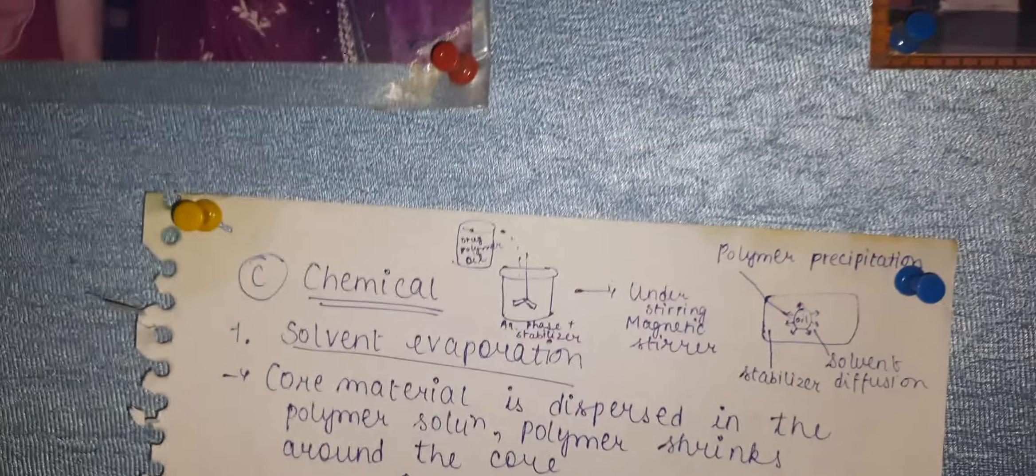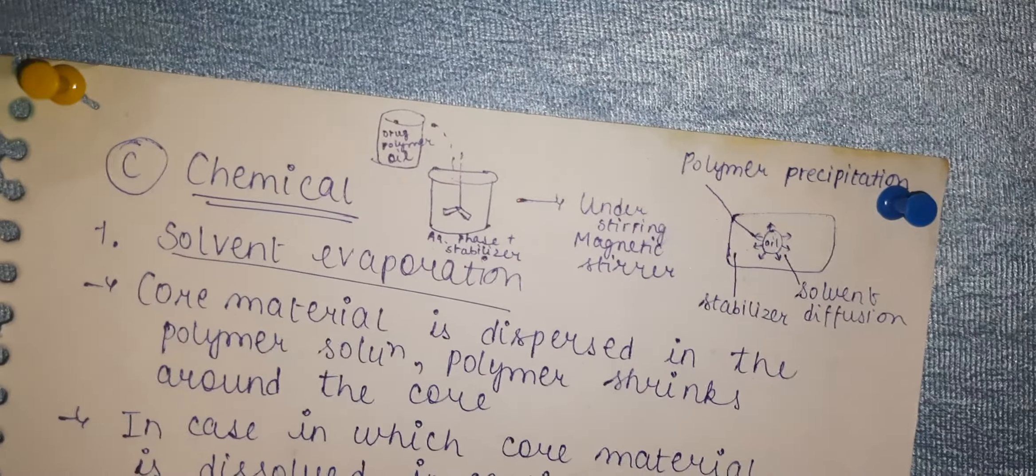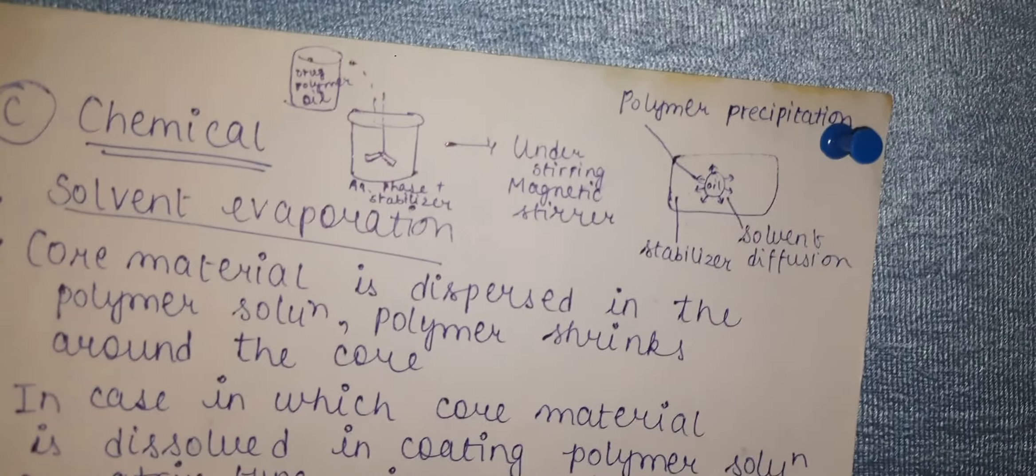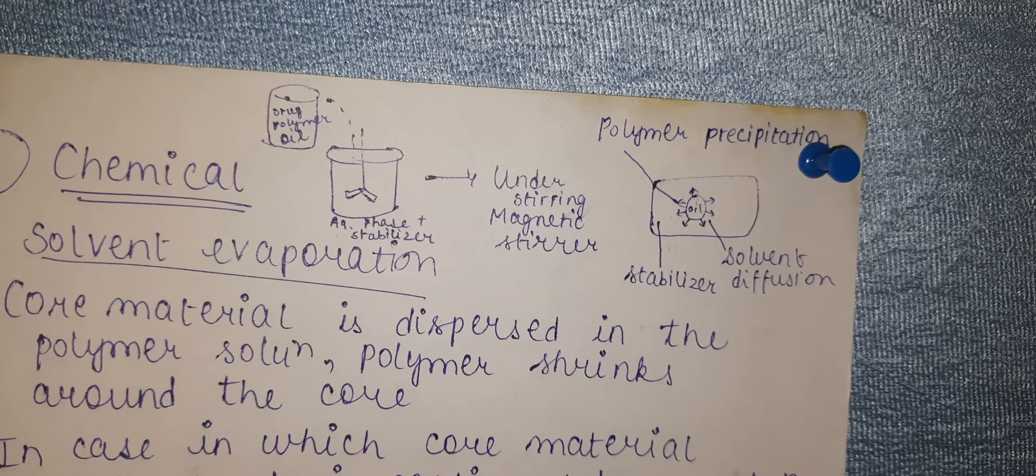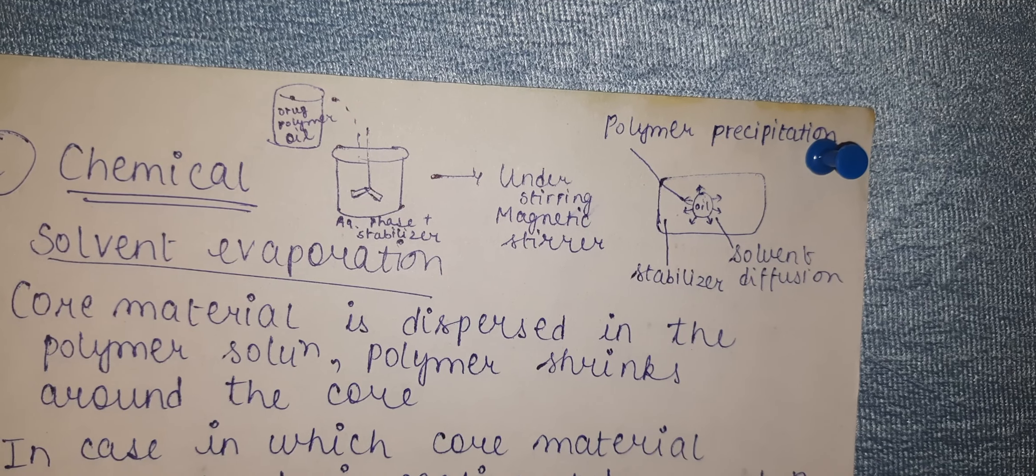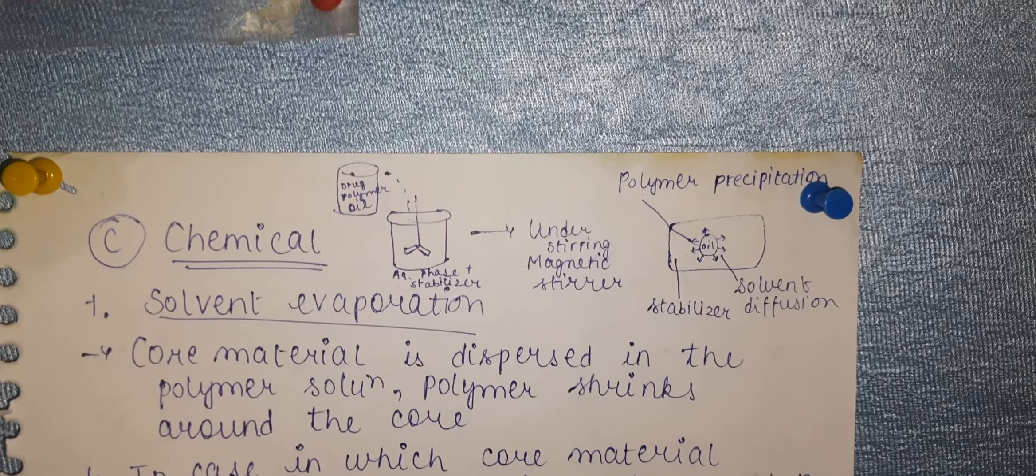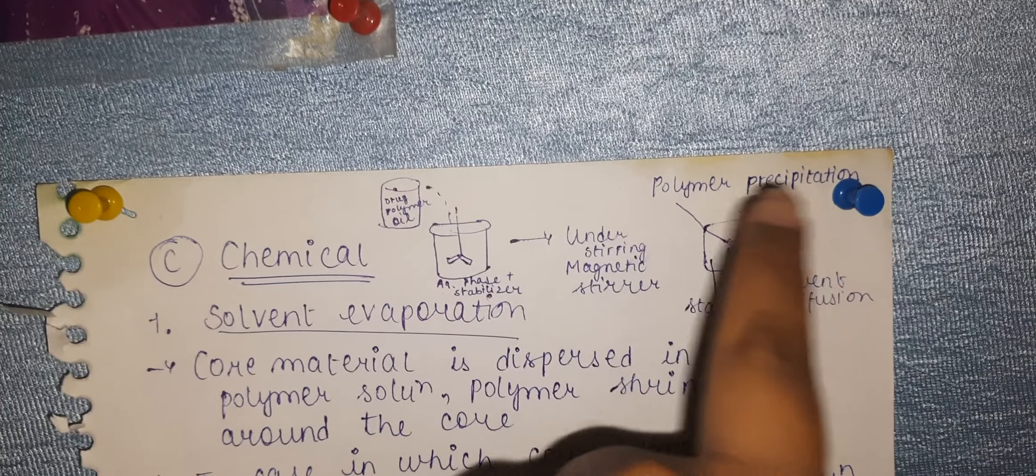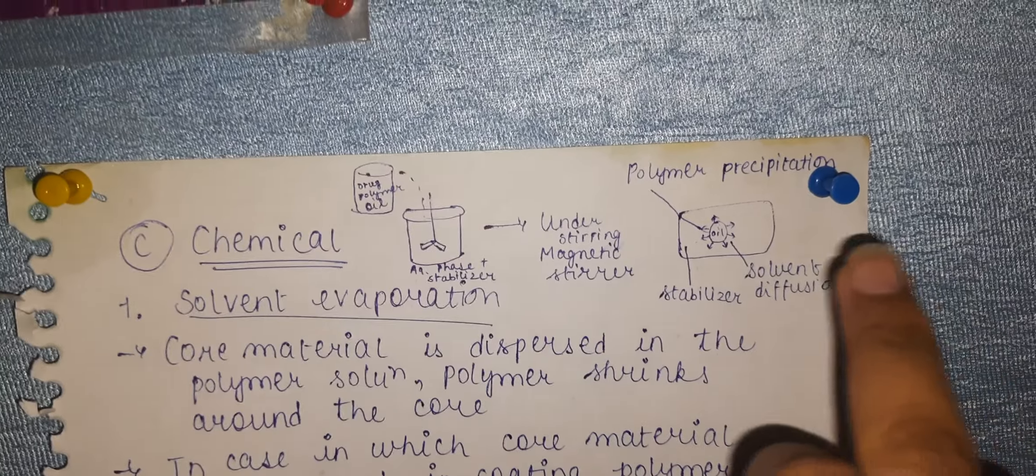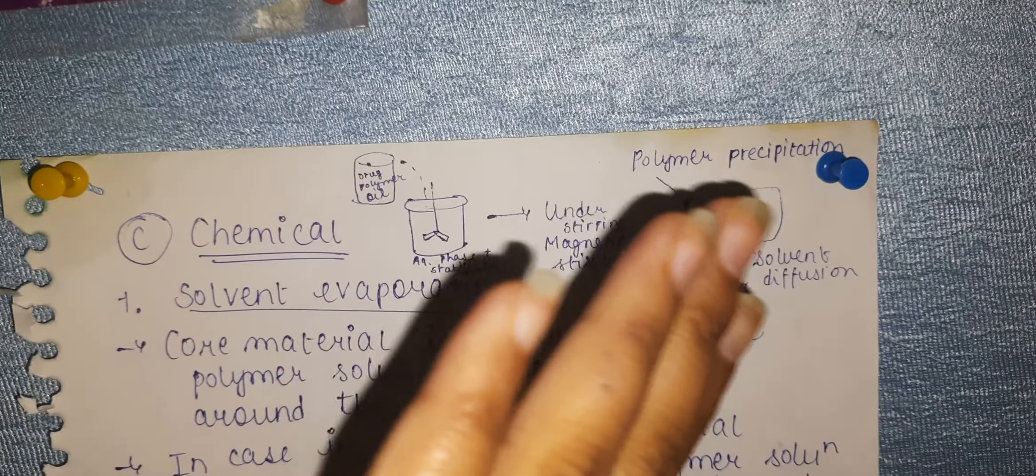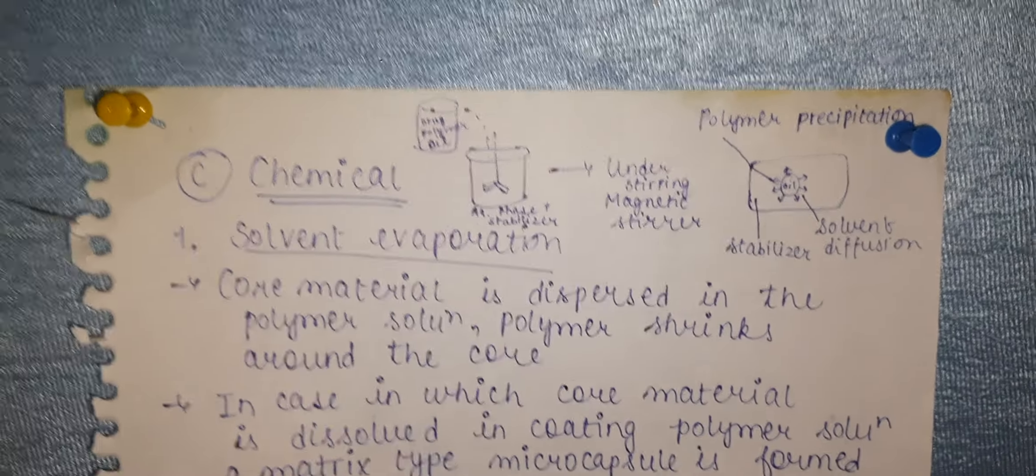We under-stir—we don't over-stir—using the magnetic stirrer. Then, everything will slowly start to separate: the oil, the stabilizer, the solvent. At a certain point, polymer precipitation happens, the solvent diffuses, and the stabilizer separates. This is what happens in solvent evaporation.